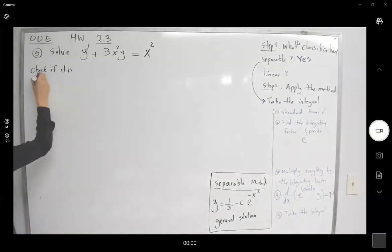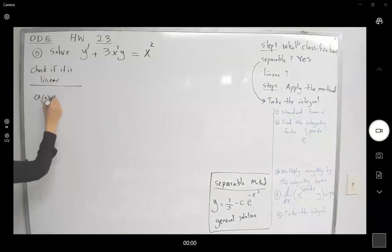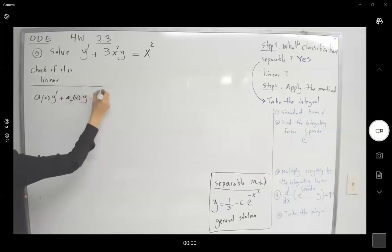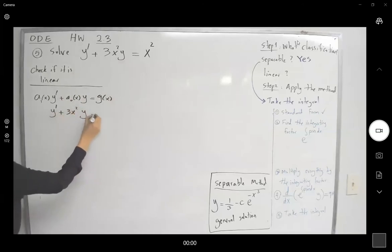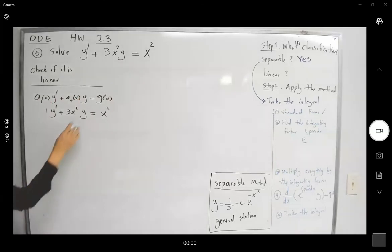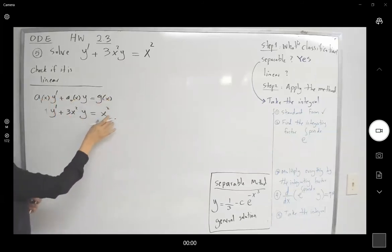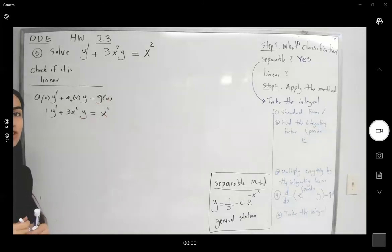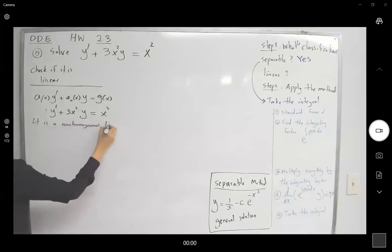Check if it is linear. A first-order linear ODE has the form a₁(x) y' plus a₀(x) y equals g(x). Looking at our equation: y' plus 3x² y equals x². Comparing term by term — the coefficient of y' is 1, the coefficient of y is 3x², and the right-hand side is x². So this is a non-homogeneous linear ODE.